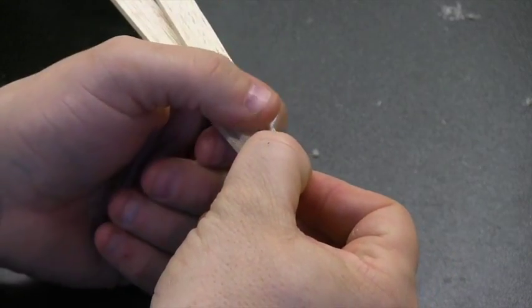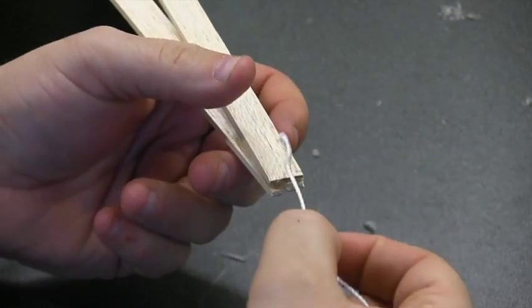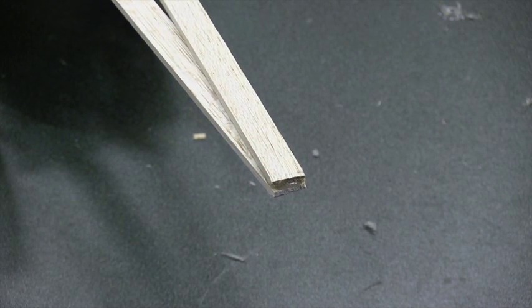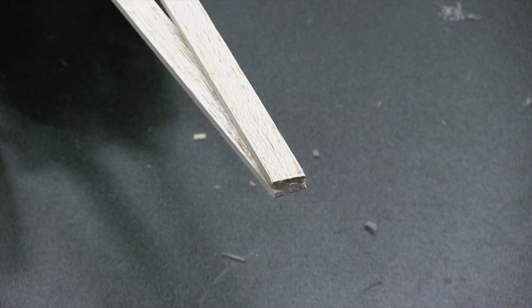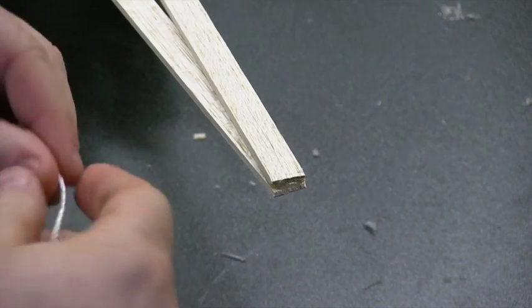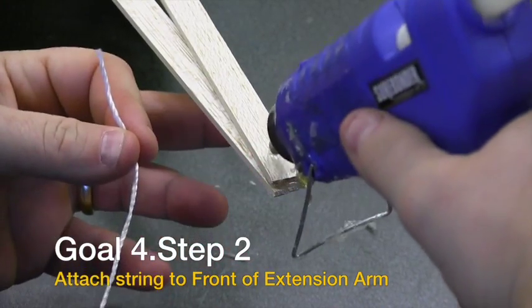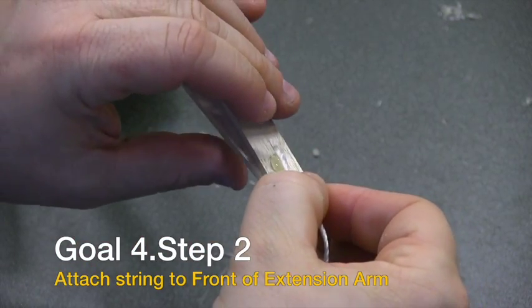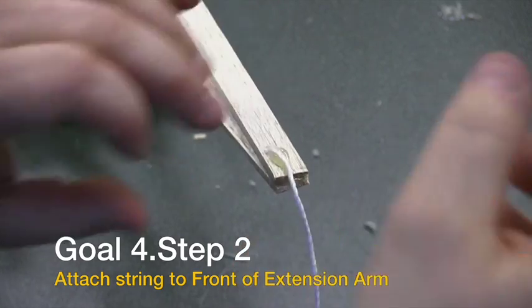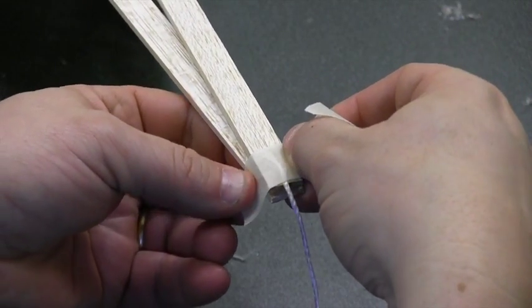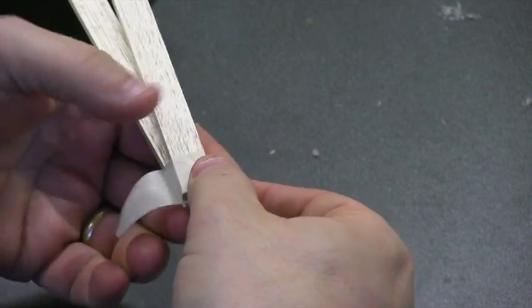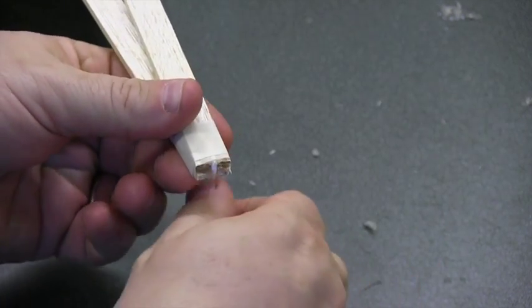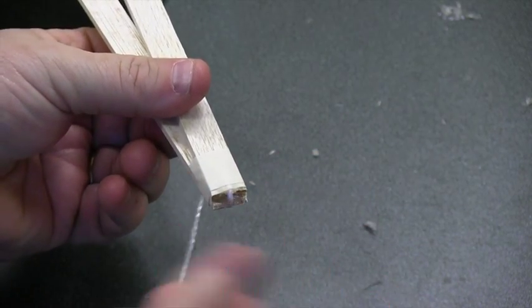You're going to start off by gluing the string to the front of the extension arms. You need a piece of tape that's about an inch and a half long. All we're going to do is put a touch of glue here at the very end. We're going to put our string into that glue, careful not to touch the glue, and then we're going to add a piece of tape over top to pinch it. We're going to wrap it the whole way around. We are then going to wrap the string under the bottom of this extension arm.